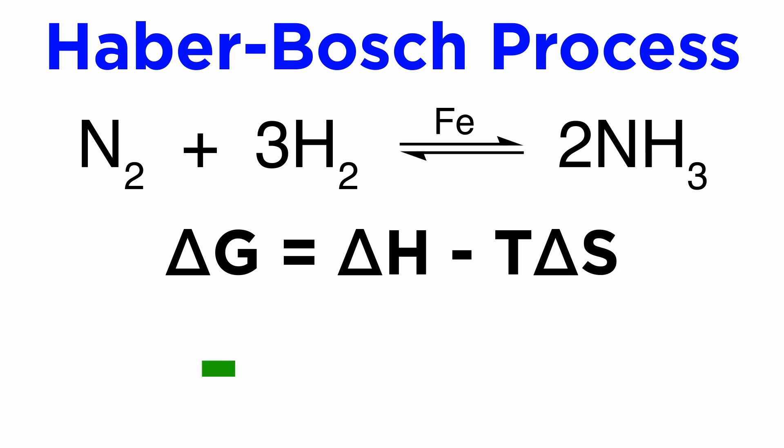For a spontaneous reaction, delta G has to be negative. Delta H is indeed negative for the reaction, but delta S is also negative. The entropy decreases in the reaction because we start with four molecules and end with two, and a decrease in entropy makes the reaction less favorable. At high temperatures, this entropy term overwhelms the change in enthalpy to make the process non-spontaneous.